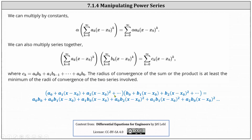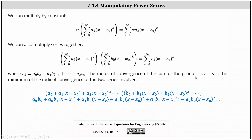Let's also look at the products involving two factors of x minus x sub zero. We have a sub zero times b sub two times the square of x minus x sub zero, plus a sub one times one factor of x minus x sub zero times b sub one times one factor of x minus x sub zero, plus a sub two times the square of x minus x sub zero times b sub zero. Combining these three like terms, the coefficient is a sub zero b sub two plus a sub one times b sub one plus a sub two times b sub zero, which again fits the formula for c sub k. Finally, the radius of convergence of the sum or the product is at least the minimum of the radii of convergence of the two power series involved. I hope you found this helpful.